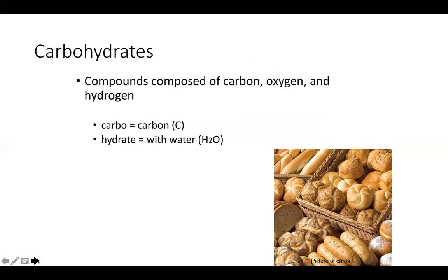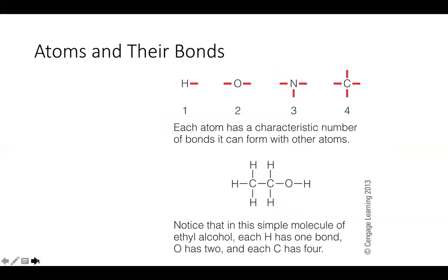Carbohydrates are composed of carbon, oxygen, and hydrogen. The name carbohydrate comes from 'carbo' for carbon and 'hydrate' for with water. When drawing chemical structures, we use abbreviations that represent chemical molecules. H is hydrogen, C is carbon, O is oxygen, and N is nitrogen.